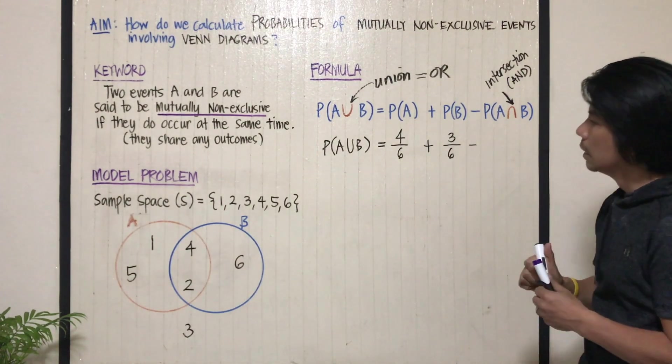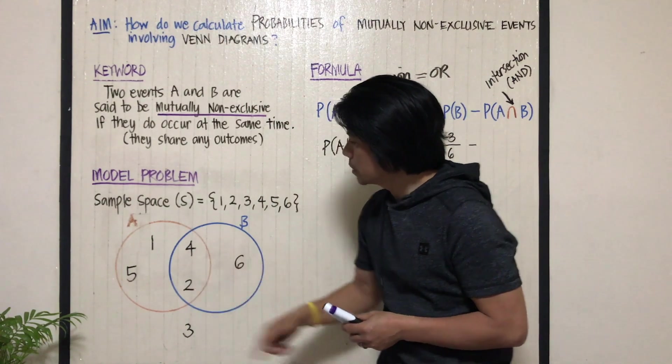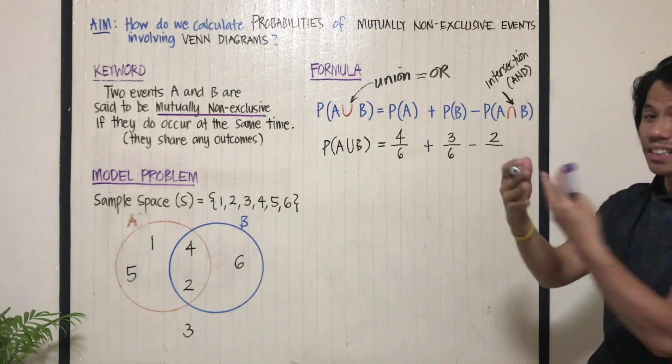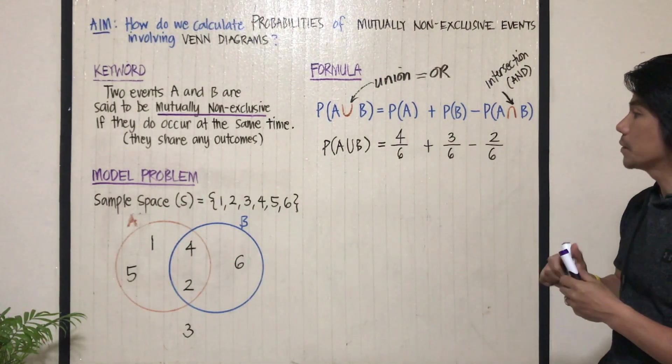Minus, now looking at the intersection, four and two. So there are two numbers inside the intersection over six, or out of six.